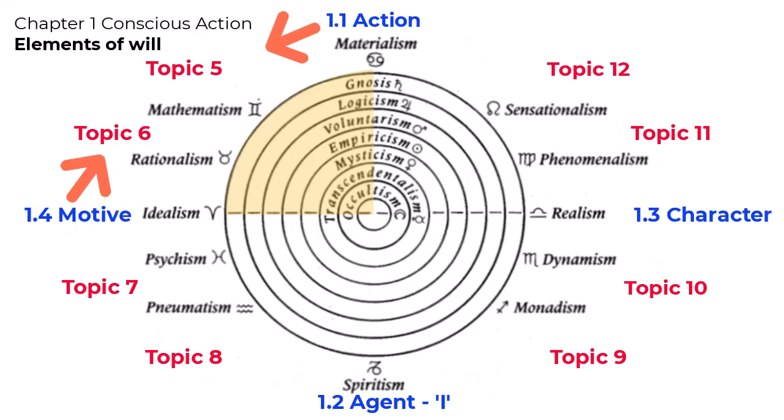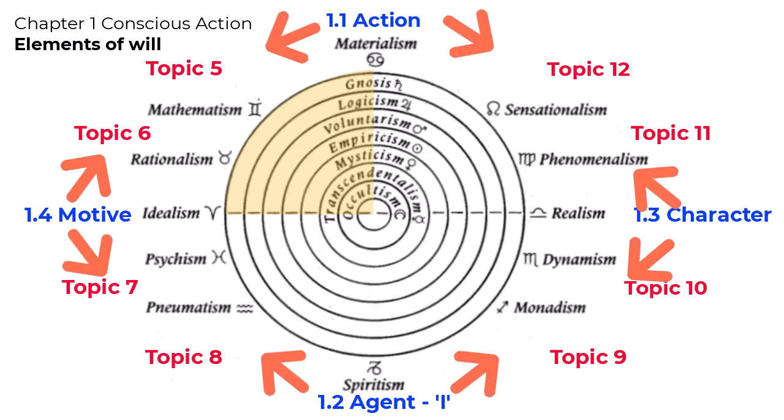Now let's look at a few specific chapter main topics. In Chapter 1, Conscious Human Action, the first four topics discuss the four main elements of an act of will: action, the agent or I, the nature or character of a person, and the motive. This means that Topics 5 and 6 are transitions between action and motive, Topics 7 and 8 are transitions between motive and I, and so on. This is the structure that determines the topics for each chapter.